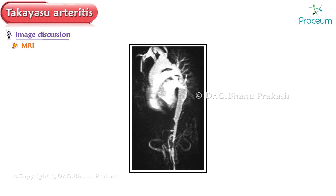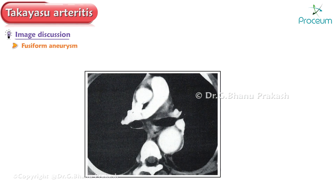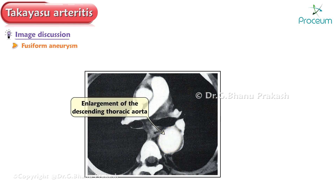Let's discuss a few images related to Takayasu Arteritis. The first image shows Takayasu aortitis on MRI in a 33-year-old man. The MRI shows narrowing of the region of the isthmus, shown by the arrowhead, as well as diffuse irregular narrowing of the abdominal aorta, shown by the arrow. The next image shows fusiform aneurysm and wall thickening; enlargement of the descending thoracic aorta and thickening of the vessel wall, shown by arrows, is apparent in this contrast-enhanced CT scan.